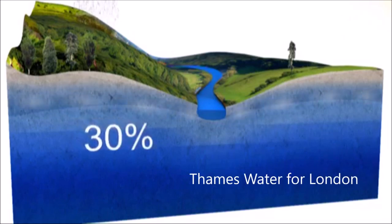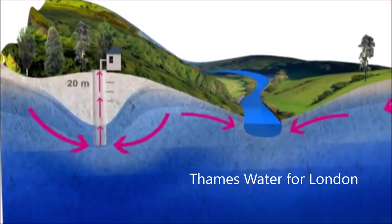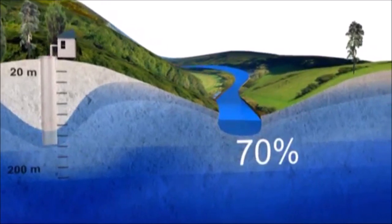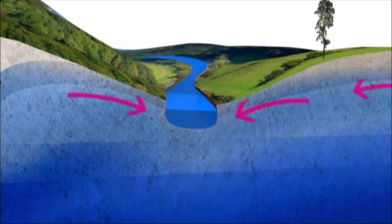30% of the water we supply is pumped from aquifers via boreholes, reaching depths of between 20 and 200 meters. The other 70% is pumped from rivers, but as the vast majority of this water also comes from aquifers, groundwater is our most important source of water.